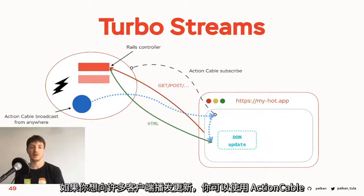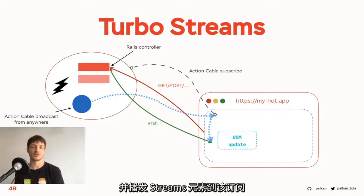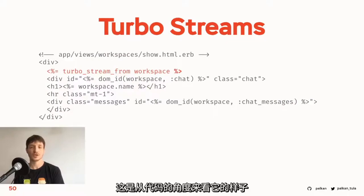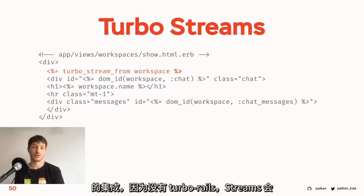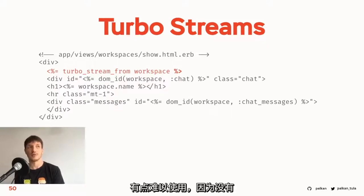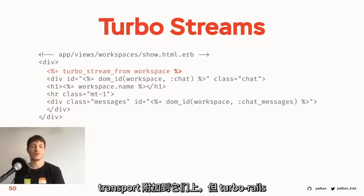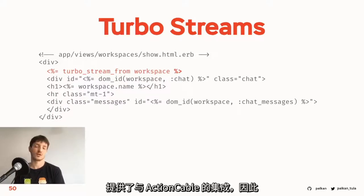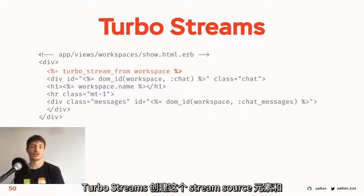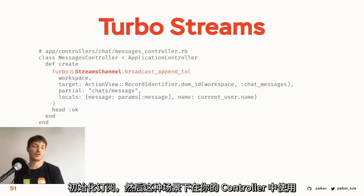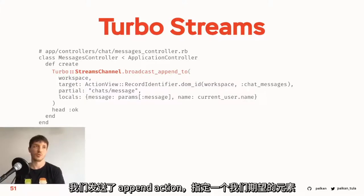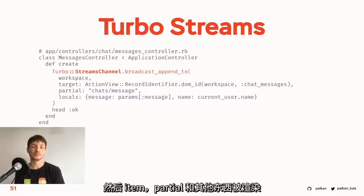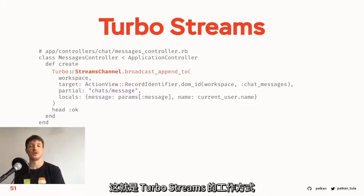Streams are one-directional — they only come from server to client. That's the difference between StimulusReflex and TurboStreams. You perform an action using GET or POST — for example, deleting an element on a page via an Ajax request. It's handled by the Rails controller; you don't need any new abstraction to work with streams — you can still use your controllers. In response, the controller returns a TurboStream element, which contains an HTML template to replace or add to the page depending on the action. Whenever this TurboStream element appears on the page, it self-destructs and performs a DOM update. Similarly, if you want to broadcast changes to many clients, you can use Action Cable and broadcast stream elements to the subscription.